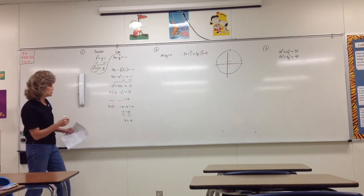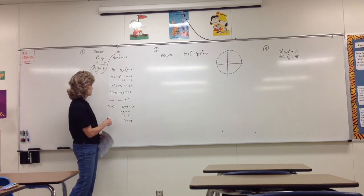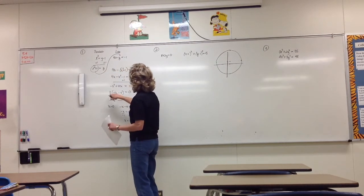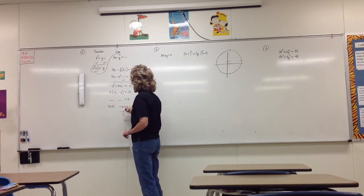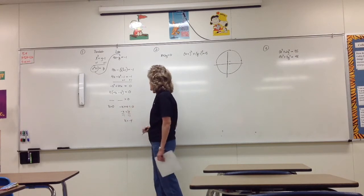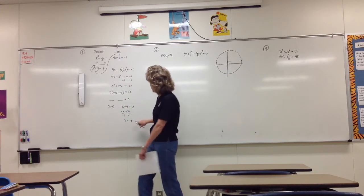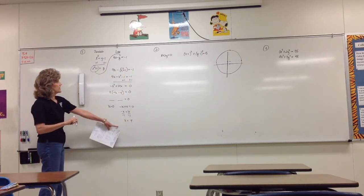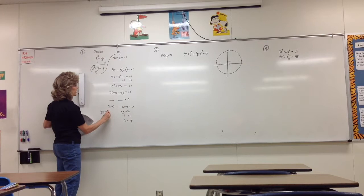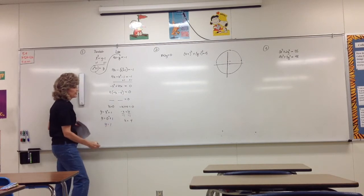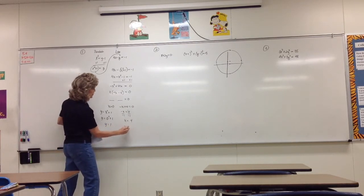So we have two possible x values: x equals zero or x equals four. Each x value has a y value to go with it. Using y equals x squared plus one: when x is zero, y equals zero squared plus one, which gives us one. When x is four, y equals four squared plus one, which gives us 17.